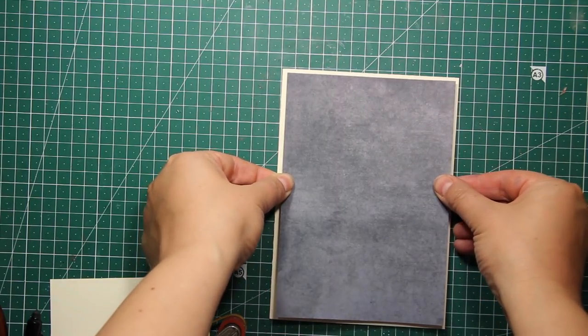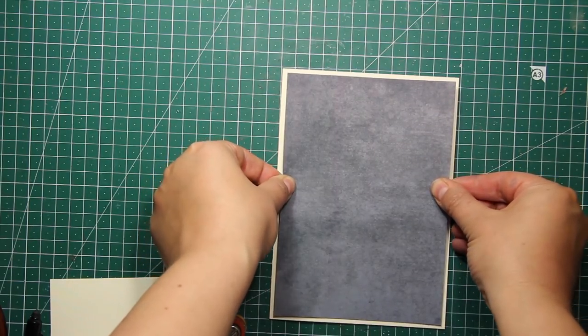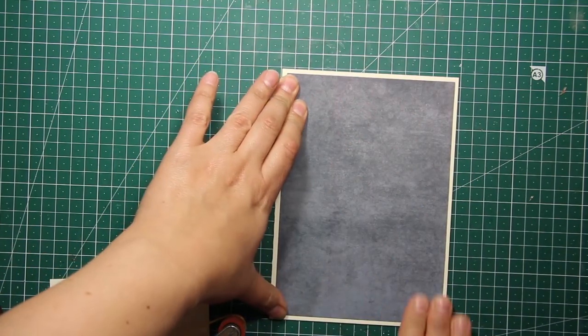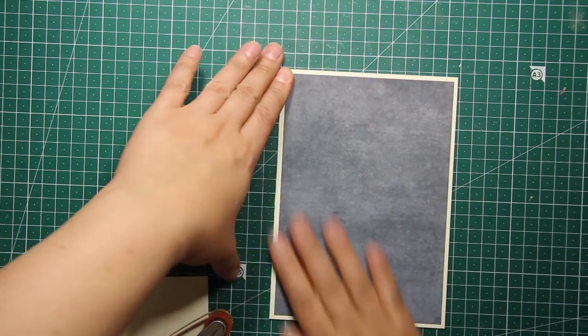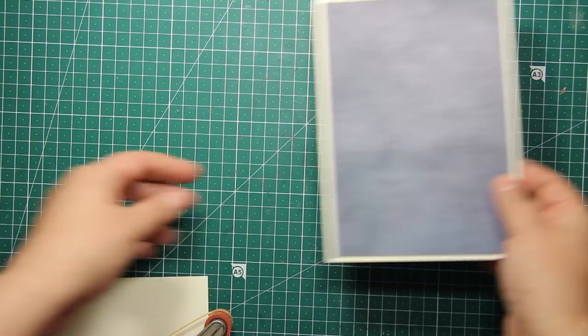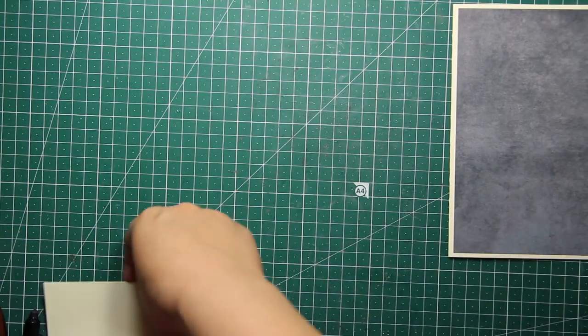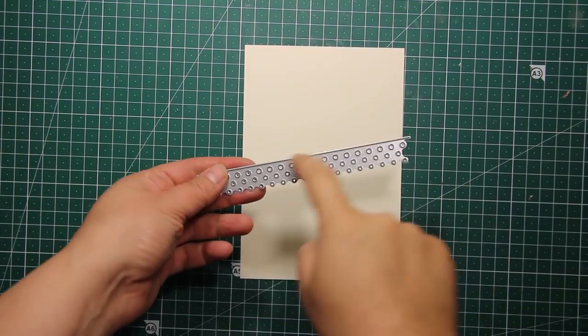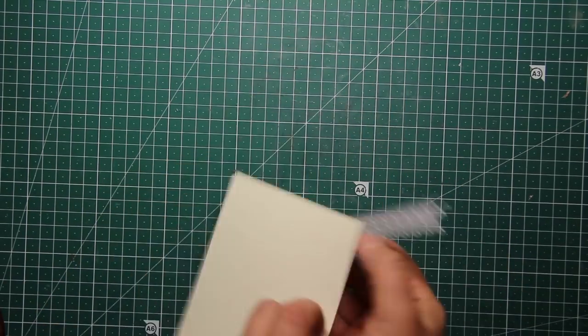So now I'm applying some tape adhesive and sticking down the blue panel right onto the card base. As always you can find the list of supplies that I'm using down below in the description box as well as on my blog. Now I'm going to start working on that cream panel.